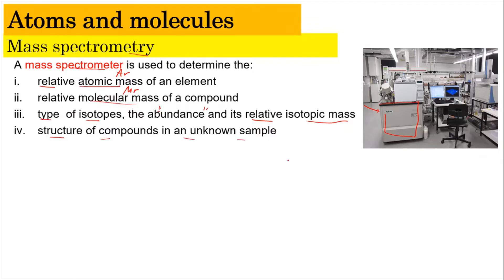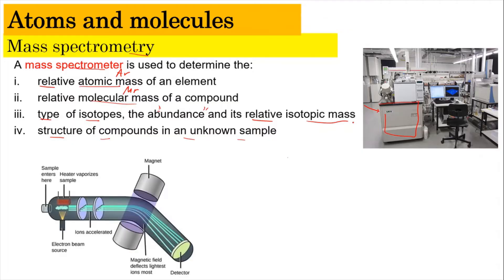From the inside, the mass spectrometer will look something like this — it has a sample placement area, a heating coil, a chamber, and a magnet. To conduct the testing, we place a sample in the sample area. For example, magnesium solid. The magnesium solid is heated, which vaporizes the sample, so the magnesium solid is converted into magnesium gas.